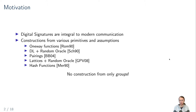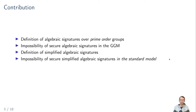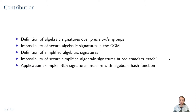So what are our contributions? Firstly, we've defined this class of signatures, which we call algebraic signatures over prime order groups, and show that in the generic group model, these signatures can't be secure. Secondly, we define simplified algebraic signatures, which also capture hidden order groups, and we show that these simplified algebraic signatures can't be secure even in the standard model. And lastly, we show an application of this whole framework and show that BLS signatures can actually be expressed as simplified algebraic signatures if you instantiate them with an algebraic hash function, and therefore BLS signatures can't be implemented securely with an algebraic hash function.